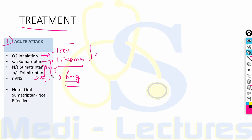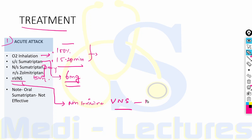Another treatment strategy is non-invasive vagal nerve stimulation, which is FDA-approved for acute attacks of cluster headache. Two-minute stimulation cycles are given at the onset of headache on the side of the pain and can be repeated after 9 minutes. An important point: oral sumatriptan is not effective in terminating the attack of cluster headache.